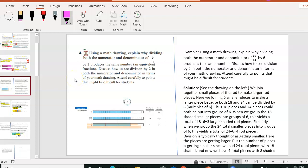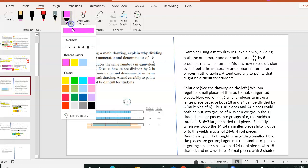Section 2.3, homework problem number 4. Using a math drawing, explain why dividing both the numerator and denominator of any fraction by 2 produces the same number, which means an equivalent fraction.